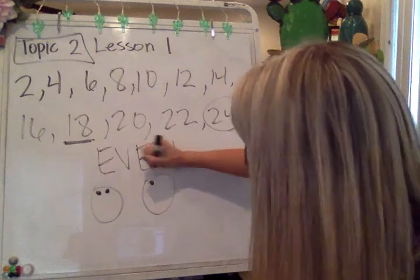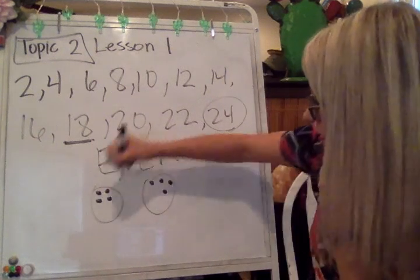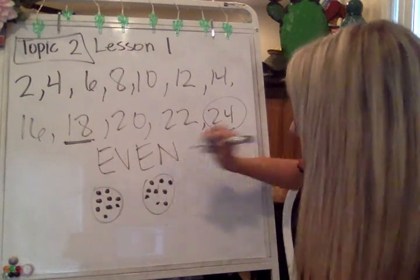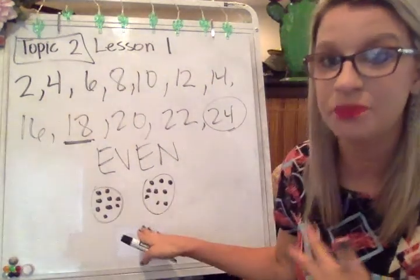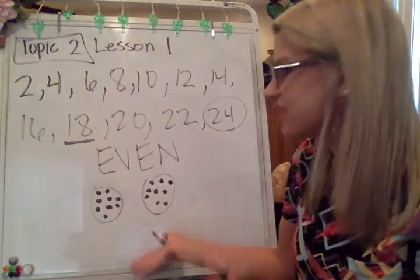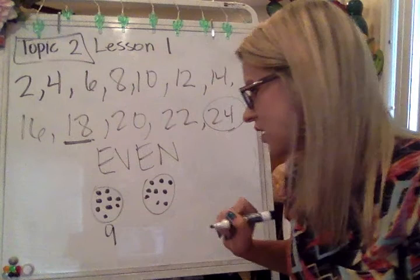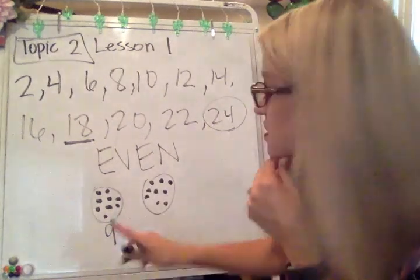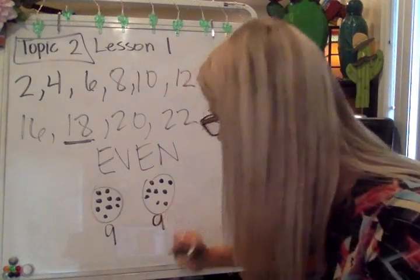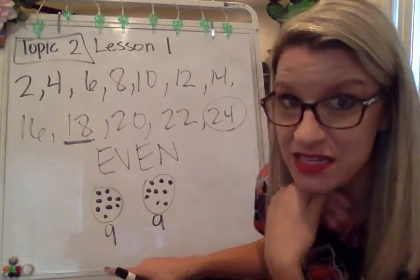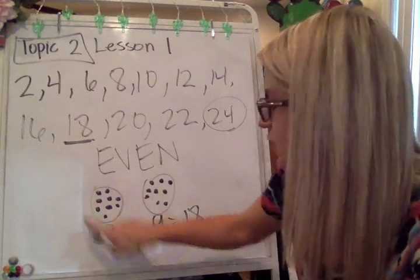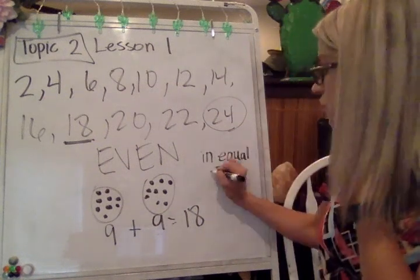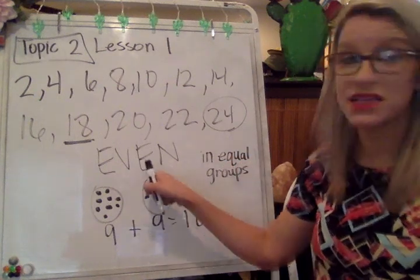We're going to pretend like you forgot that, just so we can show this. One, two, three, four, five, six, seven, eight, nine, ten, eleven, twelve, thirteen, fourteen, fifteen, sixteen, seventeen, eighteen. If I go back and count how many dots I put on each plate, I would have eighteen. I can see there are nine on this plate and there should also be nine over here. Nine plus nine does have a sum of eighteen. Here's my evidence that the number eighteen is even — if I put them into groups, they are in equal groups with no leftovers.